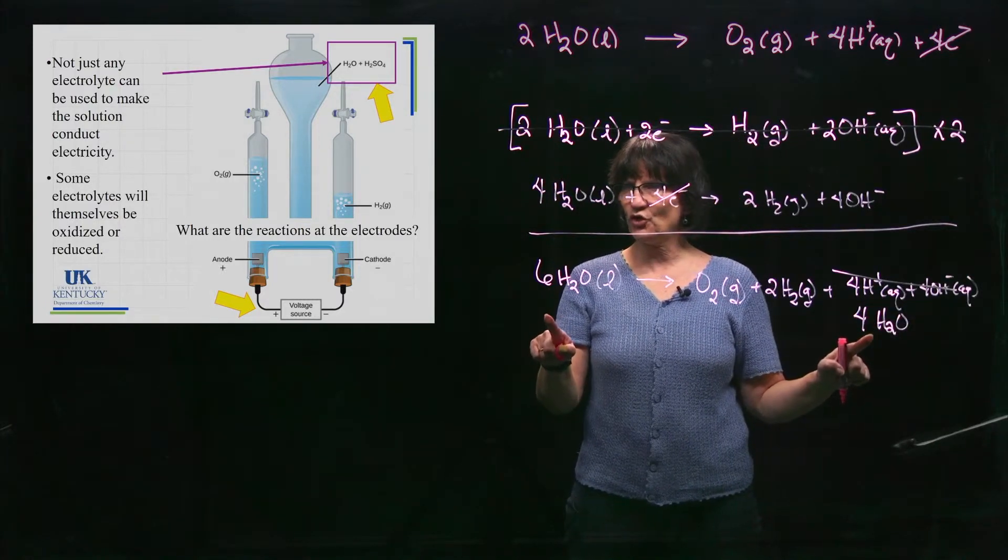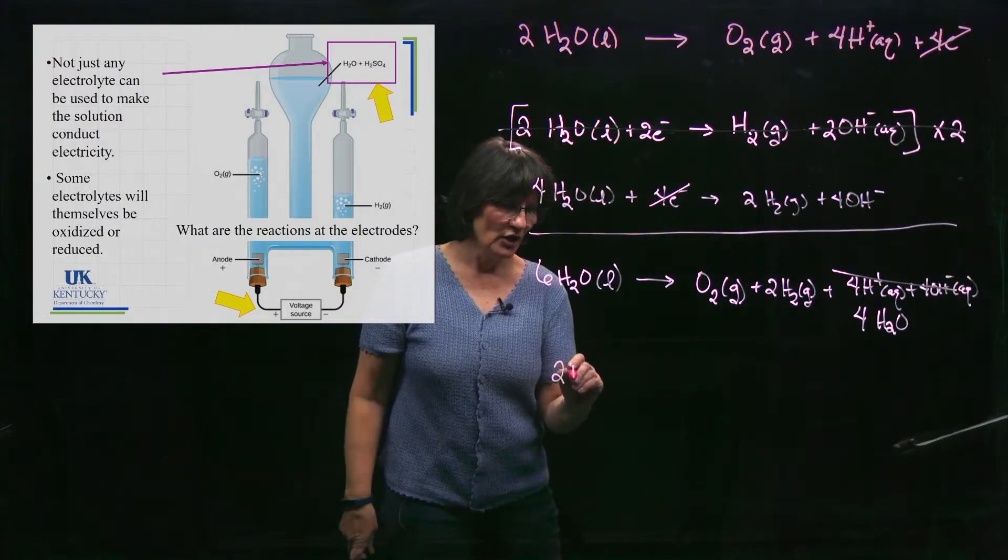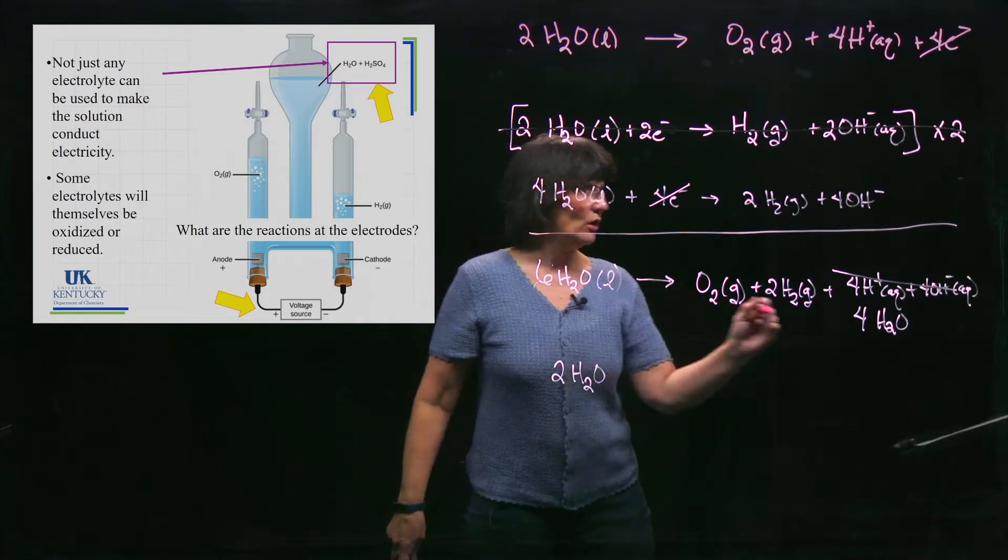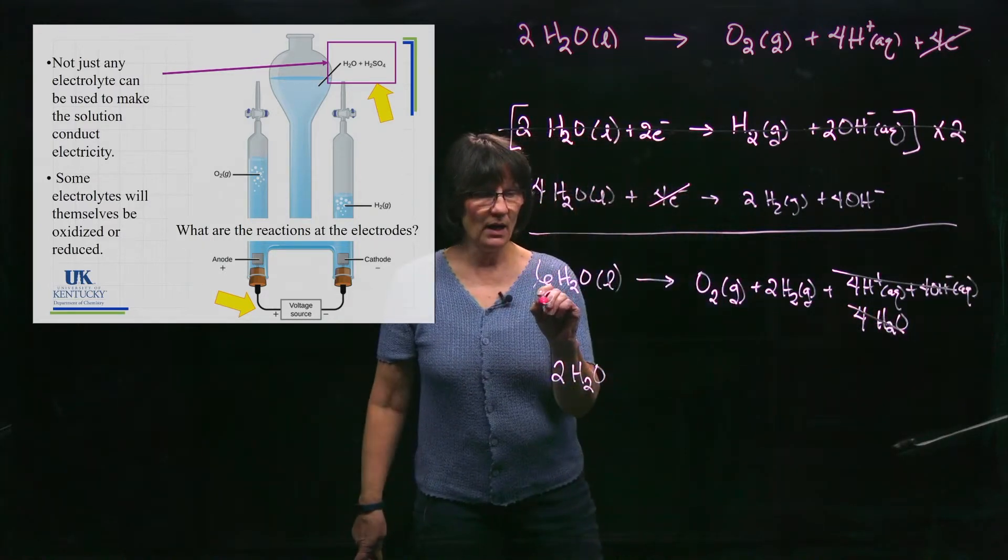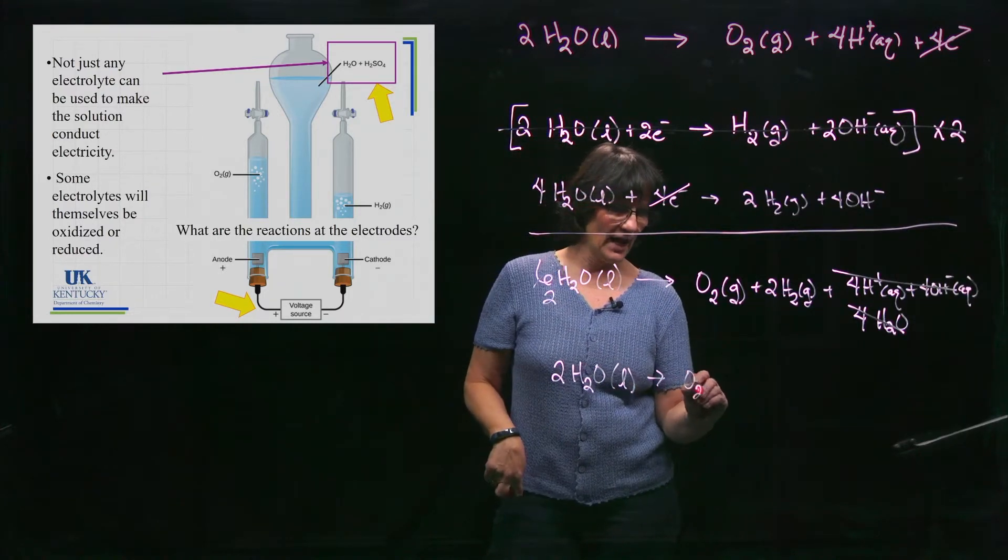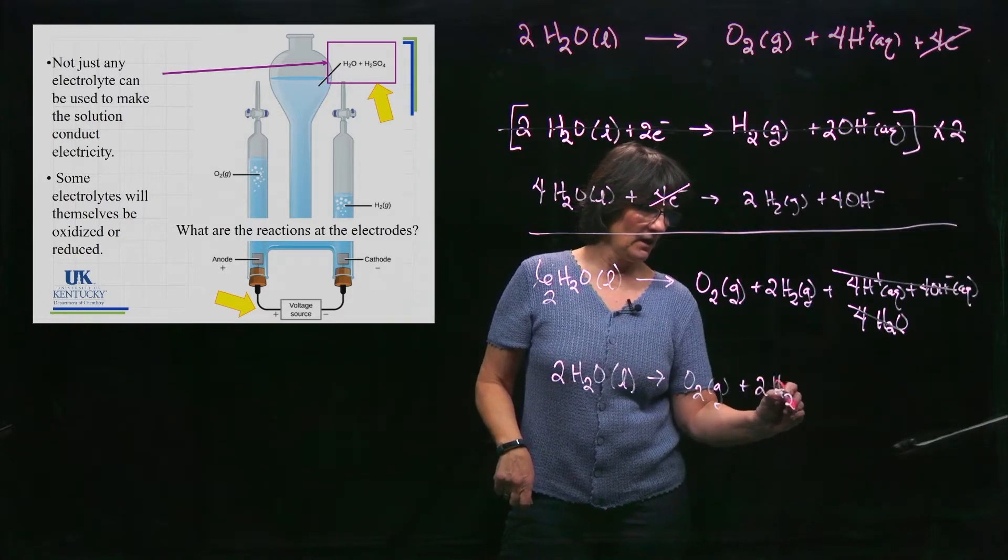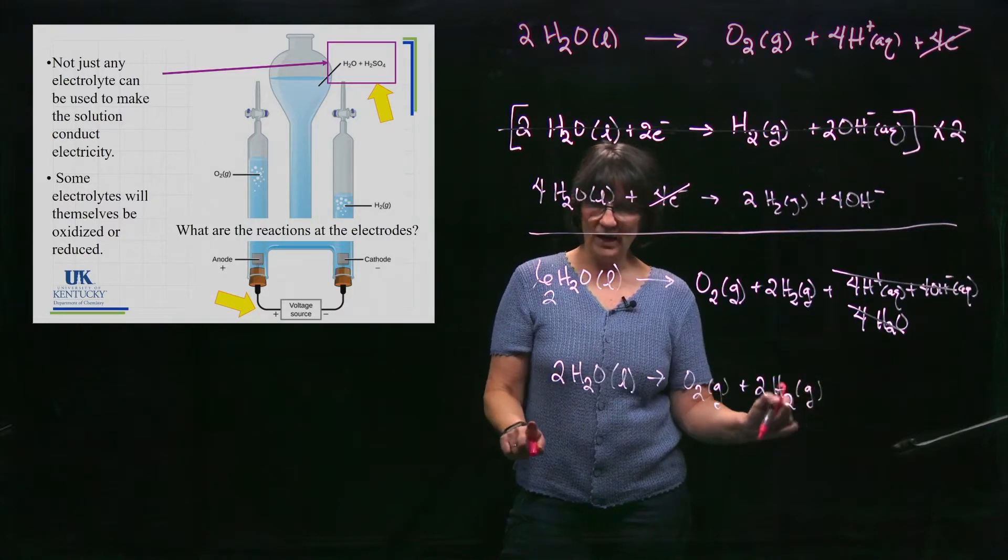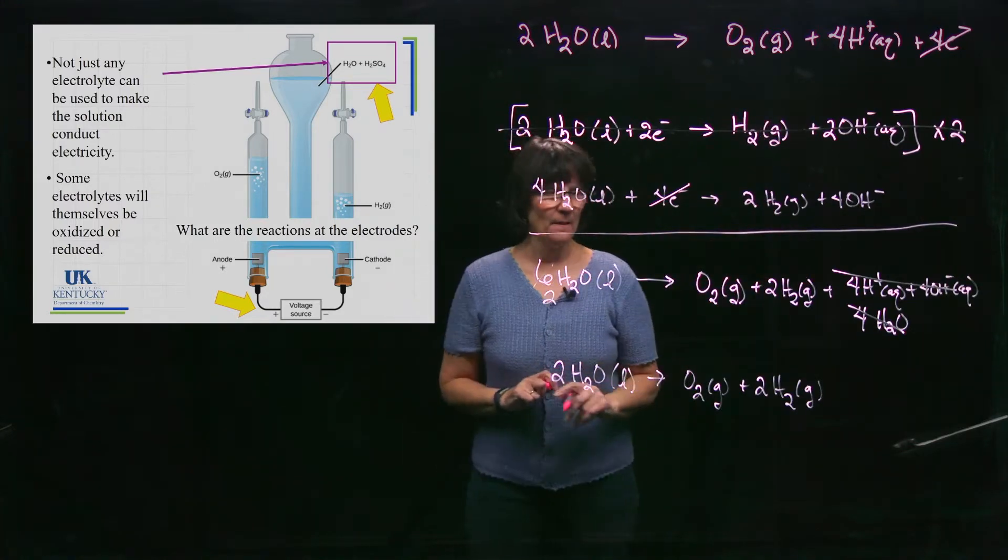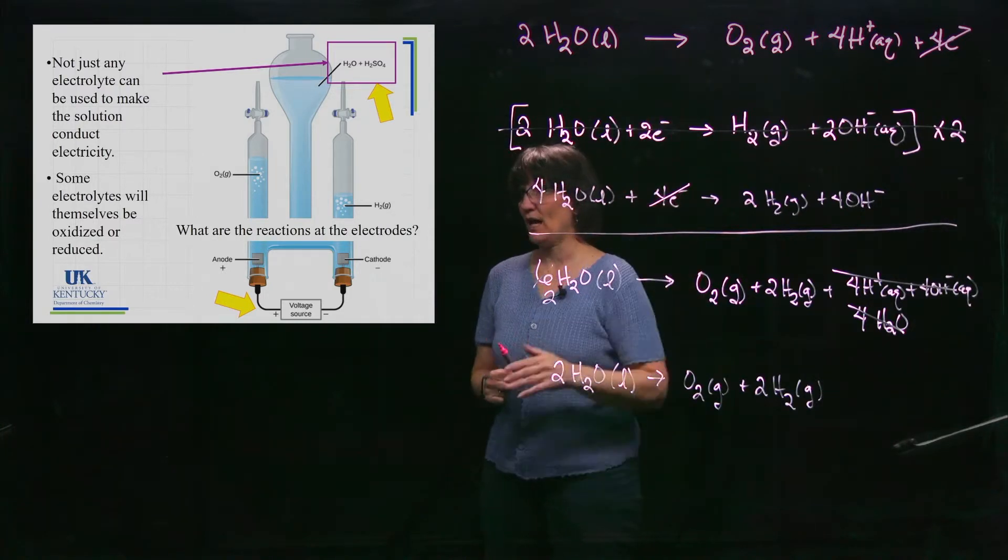When we balanced redox reactions, what did we do when we saw something like that? We turned those into waters. So that's four water molecules. These four water molecules will cancel with four of these water molecules and leave me with two. So my overall reaction looks like this: canceling all of those, leaving me two behind. 2H₂O → O₂ + 2H₂. That is the overall reaction, but the half reactions are not intuitive. In order to see the electrons transferred in a half reaction, this is how they are written.